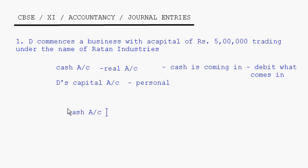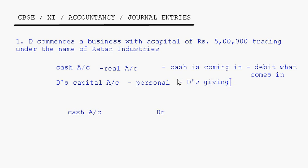We write Cash Account DR — DR is the short form for debit. For the personal account, D is giving the cash. So credit the giver — that is the rule for the personal account: debit the receiver, credit the giver.